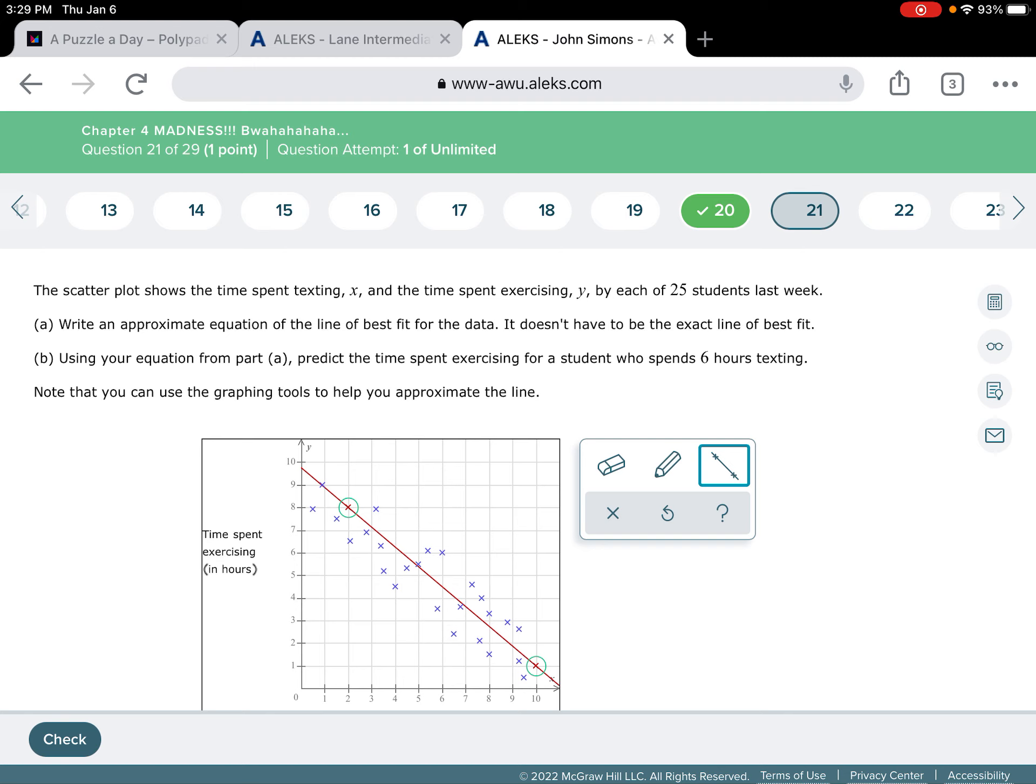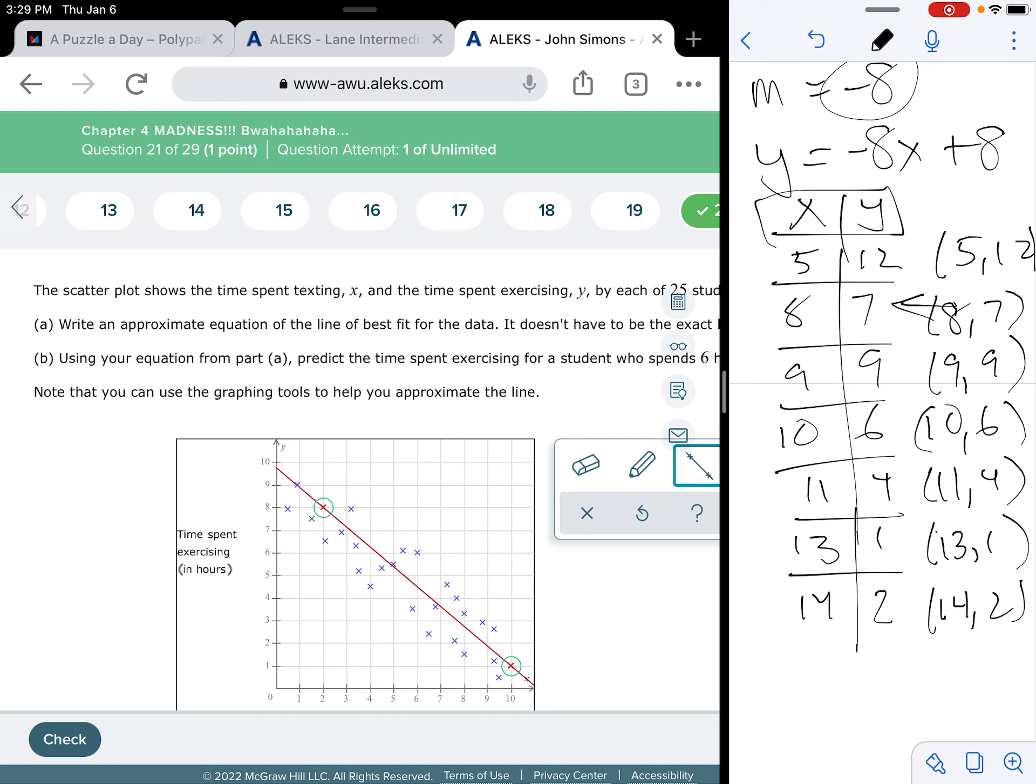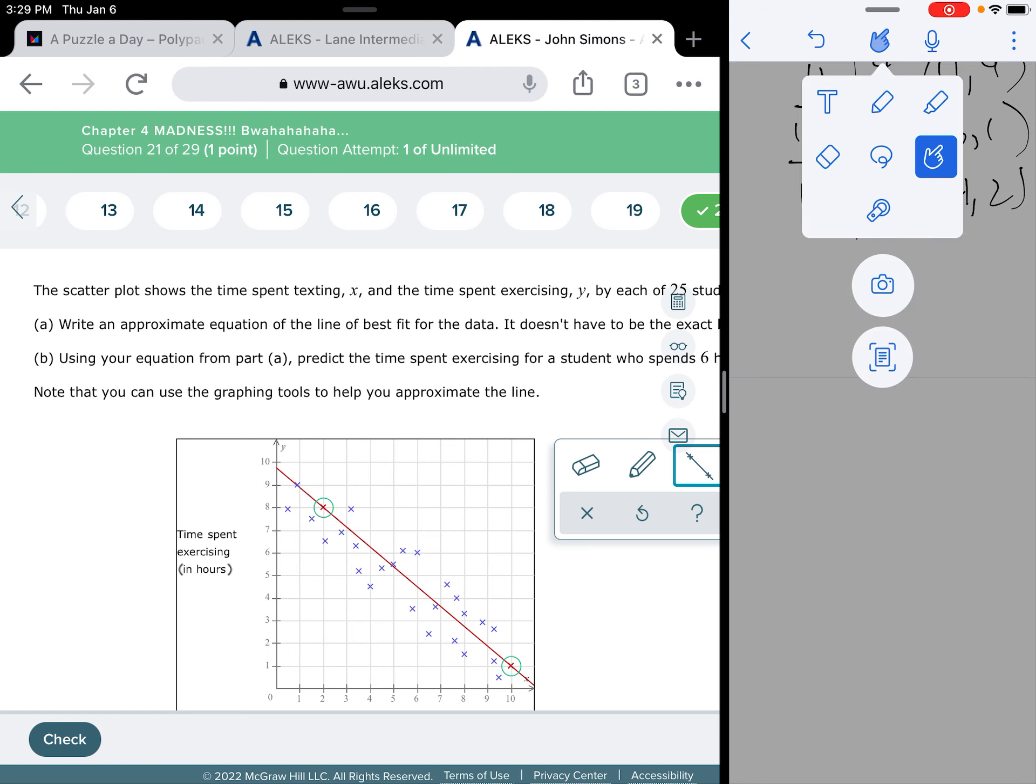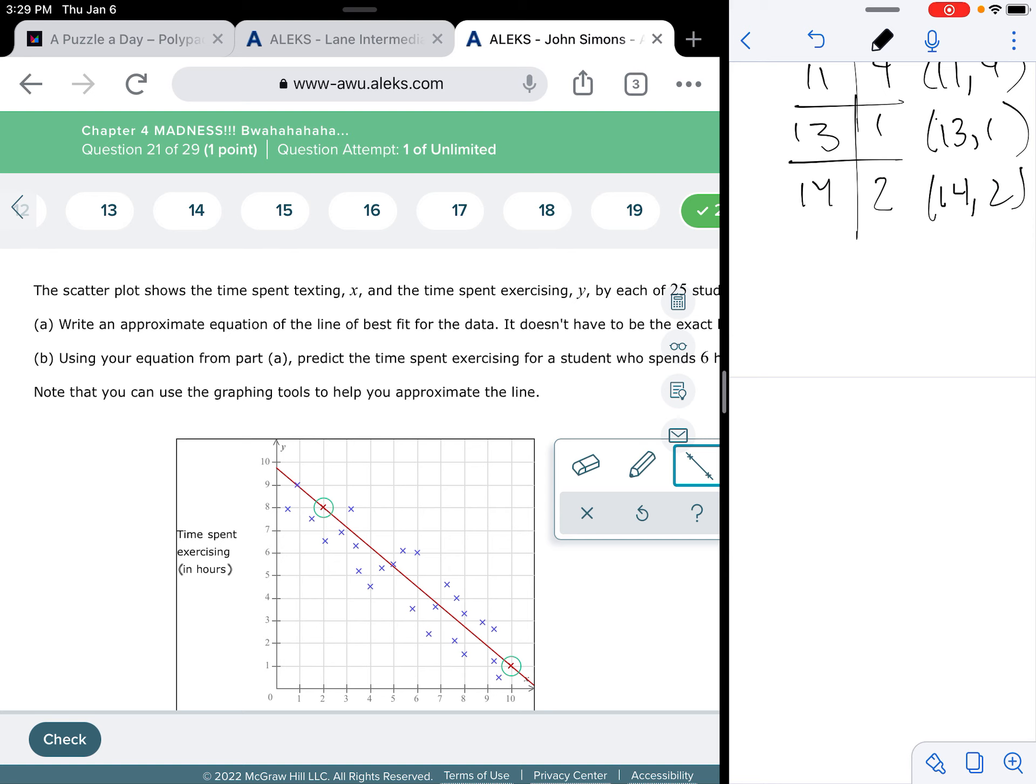All right, now hopefully you'll notice that when I did the line of best fit, I'm going to pull this up. Hopefully you'll notice that the line of best fit actually has two points on it that we sort of added. And those are those red marks that Alex adds onto it. So, we're going to use those, and those are going to be our two points that we're going to use to write the equation of this line.